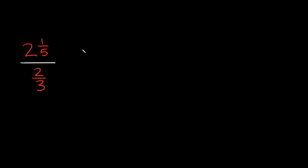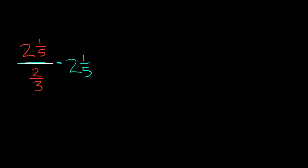So now two and one-fifth is on top, and we're dividing that by two-thirds. We'll write out the division problem the same way: the numerator divided by the denominator. So two and one-fifth divided by two-thirds. Again, we have to change our mixed fraction into an improper fraction.